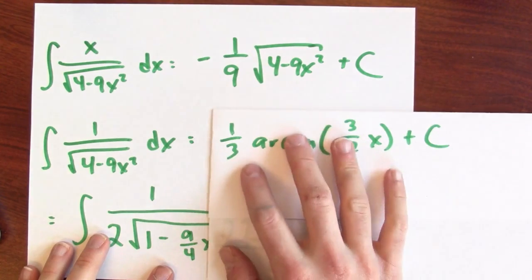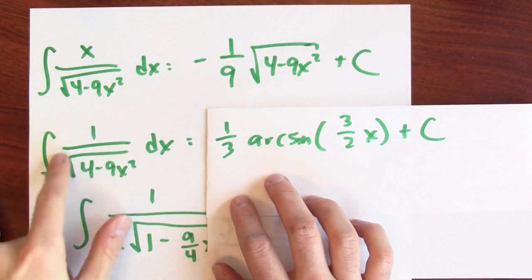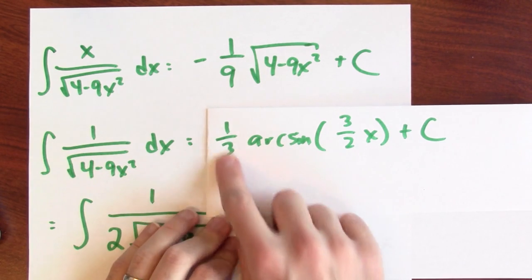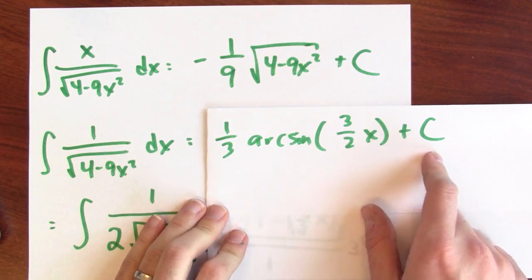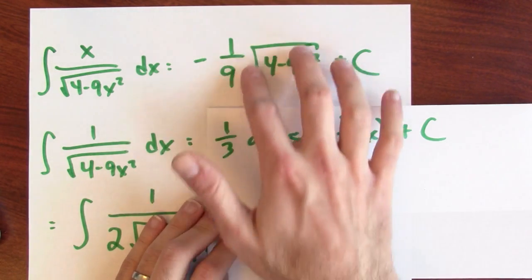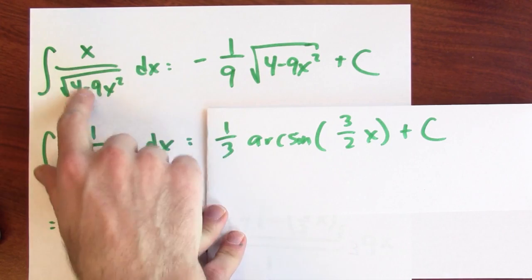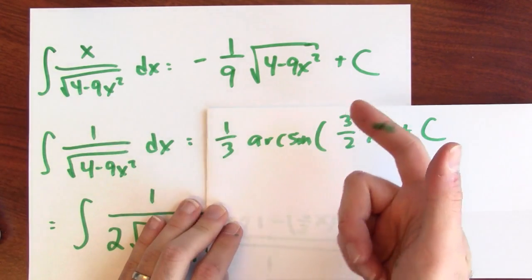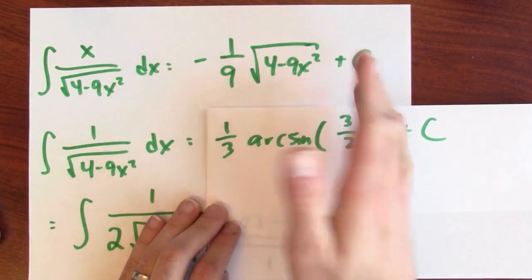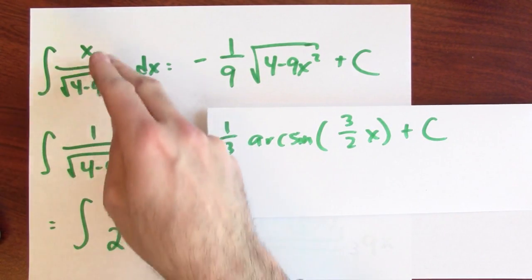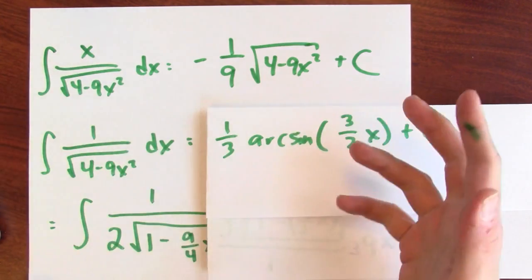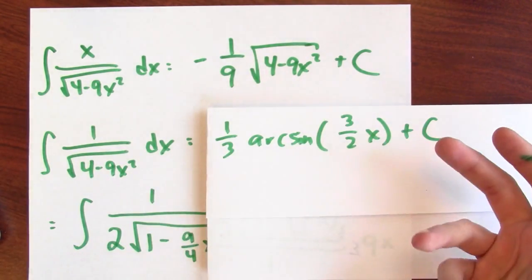Look at how different this experience was compared to that first integral that we did. We just showed that the anti-derivative of 1 over the square root of 4 minus 9x squared is 1 third the arc sine of 3 halves x plus c. And that looks totally different from anti-differentiating x over the square root of 4 minus 9x squared. I didn't need any inverse trig functions there. Even though the integrands look relatively similar, I mean, I'm just missing an x. But it totally transforms the answer.